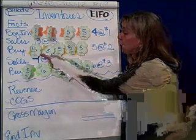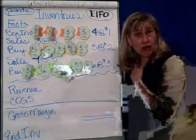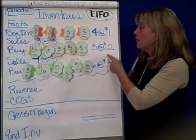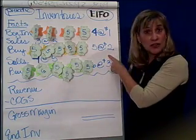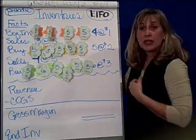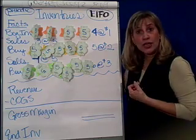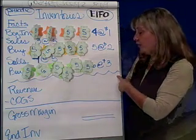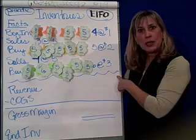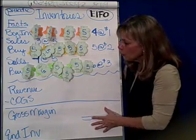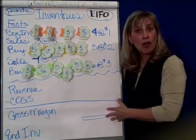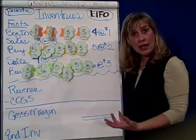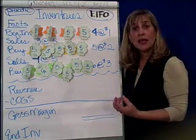We also sold three units at $5. And then we went out and we bought five units at $2. Then we sold another four units at $5. And then we bought six units at $3. Now, how would revenue and cost of goods sold look if I used the LIFO assumption instead?